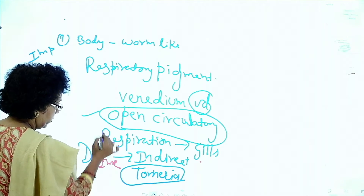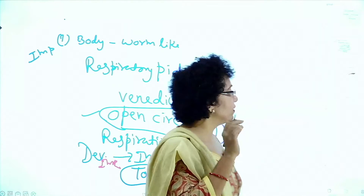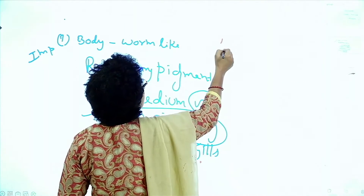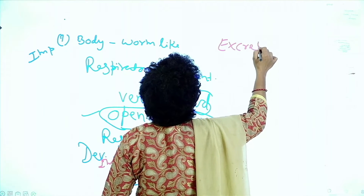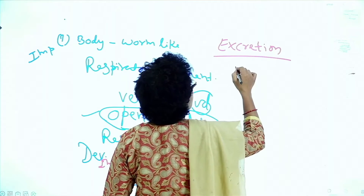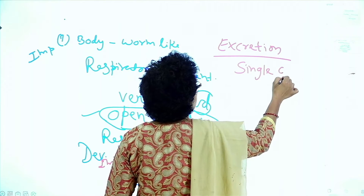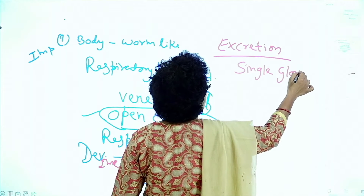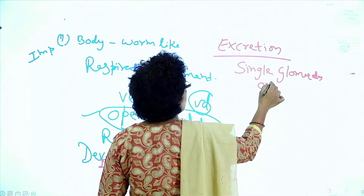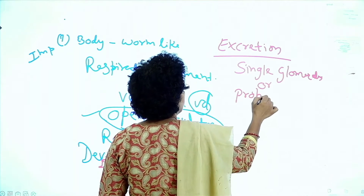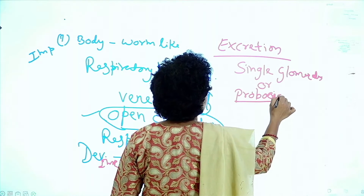This is also important for the NEET exam. Excretion occurs by a single glomerulus, also called the proboscis gland.